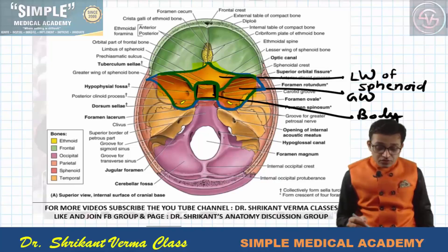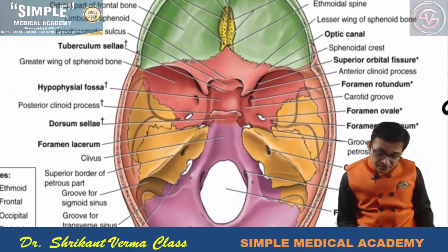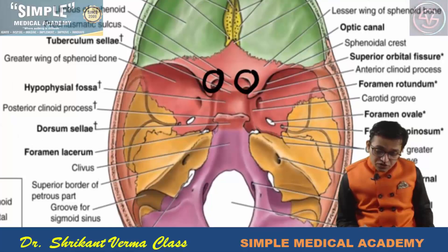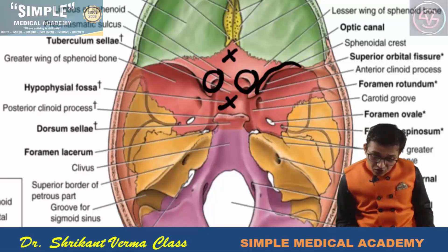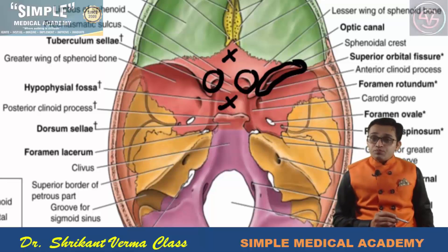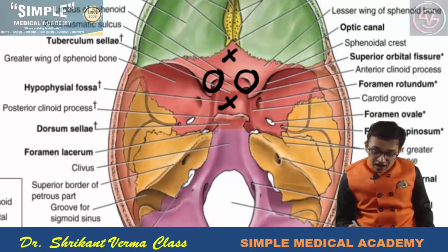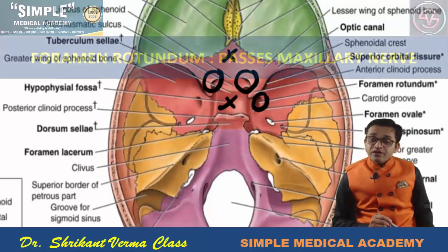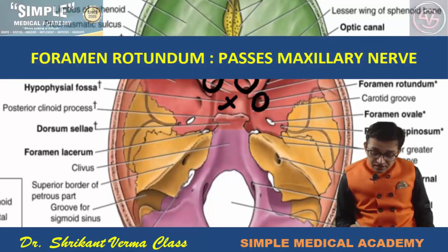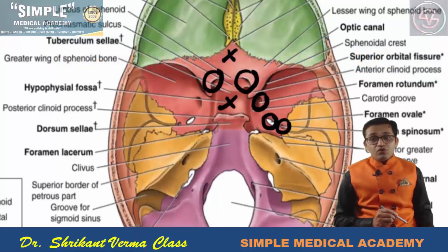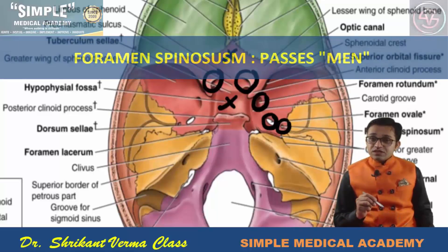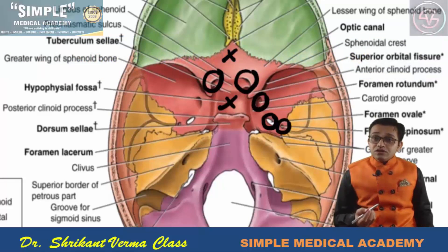The foramina we are going to discuss: the small foramen located between the lesser wing and the body of the sphenoid is the optic canal. One elongated opening is the superior orbital fissure. Here are a few other foramina: one is known as foramen rotundum, an oval-shaped foramen is the foramen ovale, and a very small foramen is known as foramen spinosum.